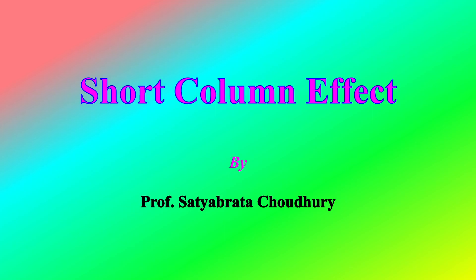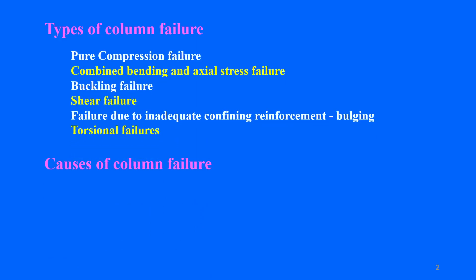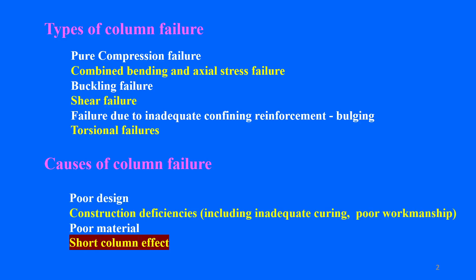Welcome. In this video on the short column effect, we shall discuss the short column effect that occurs during earthquakes on some columns in buildings. First, we'll see the types of failure of columns and what causes column failure. The types include: failure under pure compression, combined bending and axial stress, buckling failure, shear failure, failure due to inadequate confining reinforcement leading to bulging, and torsional failure. Causes include poor design, construction deficiencies, poor workmanship, substandard material, and the short column effect — which is our focus.